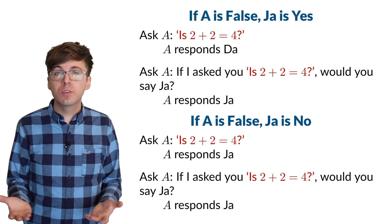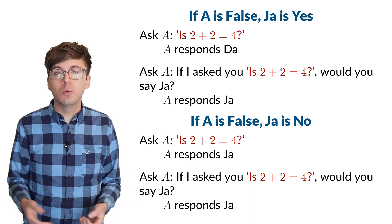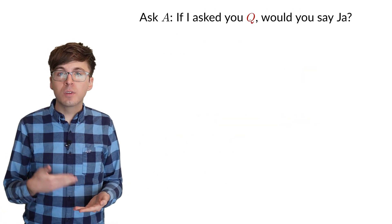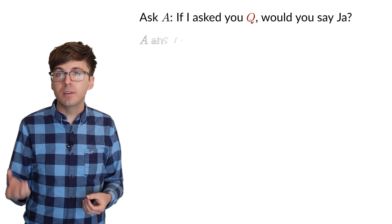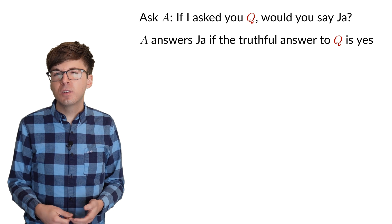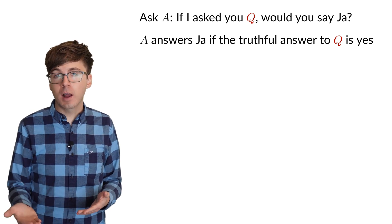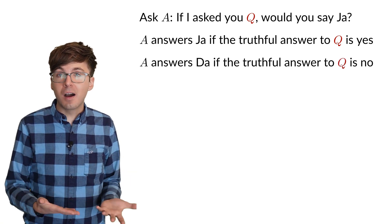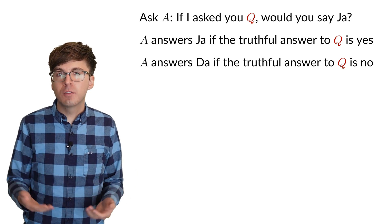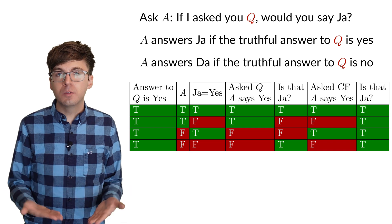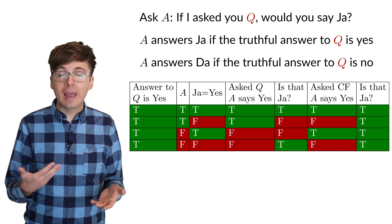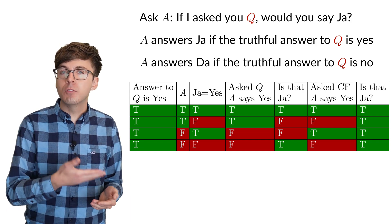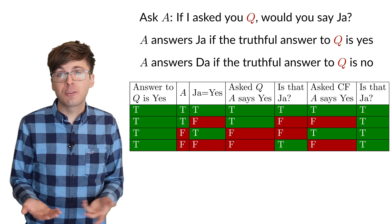So again, A will always respond ya since 2 plus 2 does equal 4. Now, it doesn't really matter that we ask the 2 plus 2 equals 4 part. What mattered was that it was a question where the truthful answer is yes, 2 plus 2 does equal 4. So what if we change the question to be incorrect? Like, is 2 plus 2 equal to 5? In this case, the answer will always be da. Let's verify this by finishing this truth table for the cases where Q is false. This will confirm that true and false gods will always answer ya or da depending on if Q is true or false. No matter what ya and da actually mean.